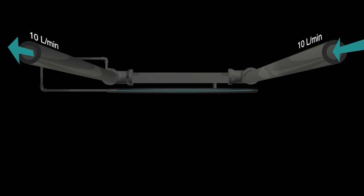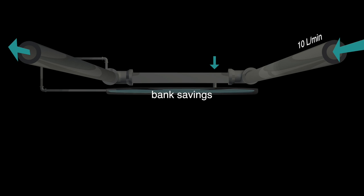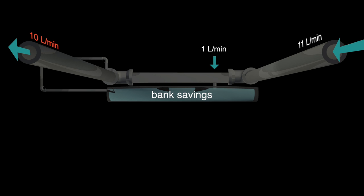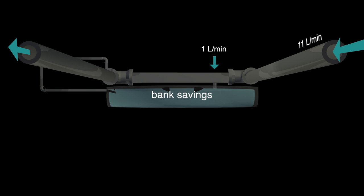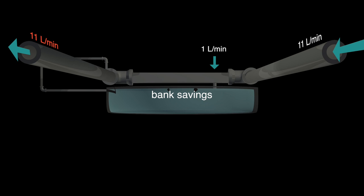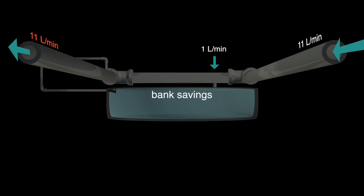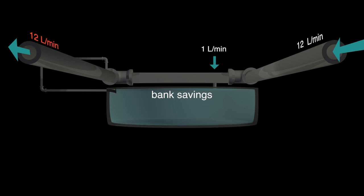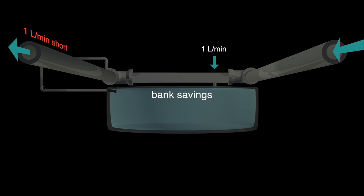Now let's divert a steady portion of the flow — for example, 1 litre per minute into the tank. In order to maintain the required flow of 10 litres per minute, we need to increase the input to 11 litres per minute. But the output swan always demands exactly the same amount that came into the input in the previous minute. So if we increase the input to 11 litres per minute, the output demand also increases to 11 litres per minute. If we then increase the input to 12, the output demand also increases to 12 litres per minute, and so on. Because 1 litre per minute is still going into the tank, no matter what we do, we will always be 1 litre per minute short until the diversion stops.